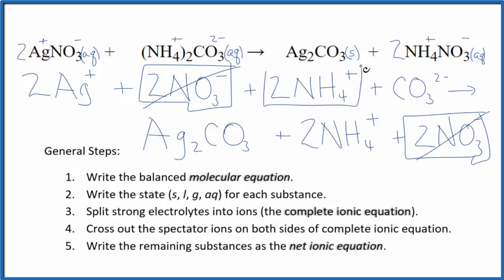Two ammonium ions in the reactants here, and then in the products down here, two ammonium ions. Again, spectator ions. Cross them out. What's left?